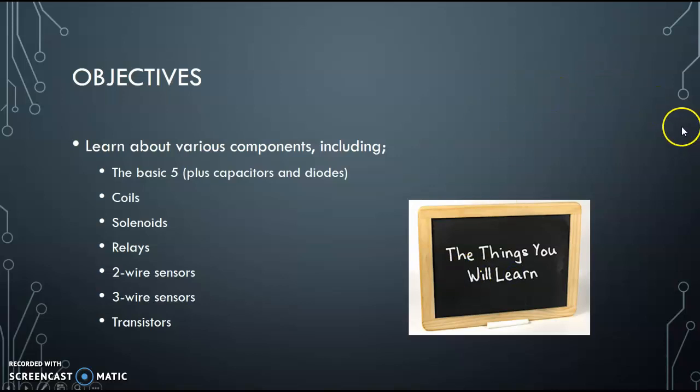Our objectives are to learn about various components including the basic five. So you remember the five basic components every circuit needs we talked about a few weeks ago? We're going to add to that, we're going to add capacitors and diodes. And then we're going to talk about coils, solenoids, relays, two wire sensors, three wire sensors, and transistors. And the goal today is just to talk about what the components look like, physically and the schematic representation of what they look like, and talk a little bit about operation and theory. Next week we'll start talking about some diagnosis and then I'll build some circuits for you.